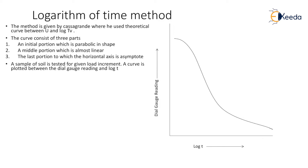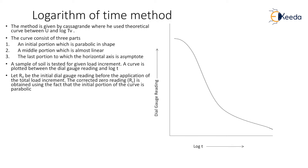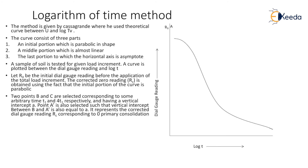Here is the curve obtained in the laboratory for dial gauge reading against log T. Let R0 be the initial dial gauge reading before the application of the load increment, corresponding to point A. The corrected zero reading RC is obtained using the fact that the initial portion of the curve is parabolic. Two points B and C are selected corresponding to some arbitrary time T1 and 4T1, where B indicates T1 and C indicates 4T1.